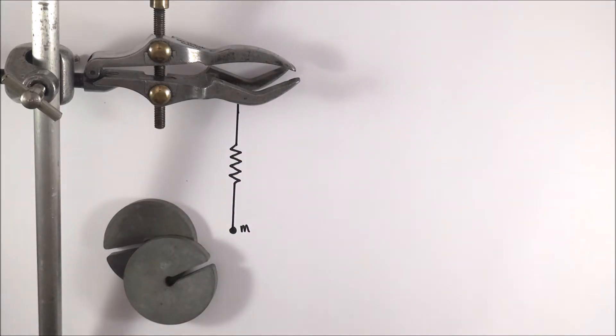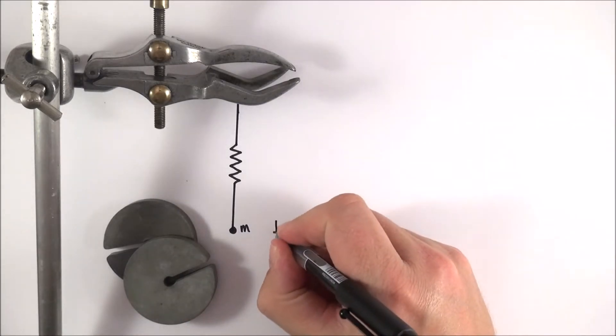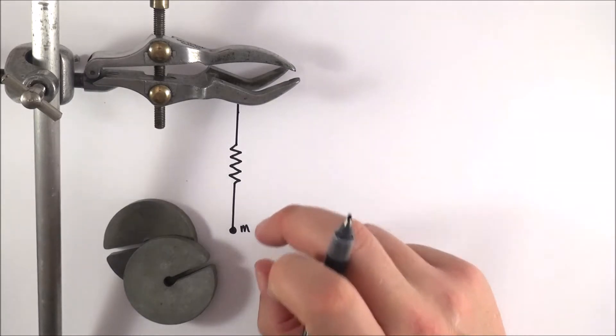Now if we do that, what we're going to do is we're going to be in charge of the mass, we're going to control it, and this is our independent variable. So I'm just going to put IV there to be my independent variable. This is what we are deciding to change.